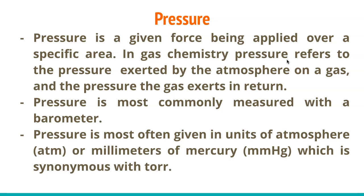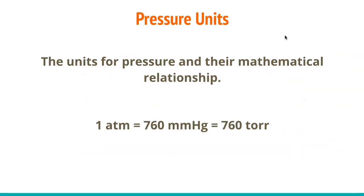To relate these units: 1 atm equals 760 millimeters of mercury, which also equals 760 torr, since mmHg and torr are equivalent. This relationship is what you'll use for any unit conversion involving pressure.